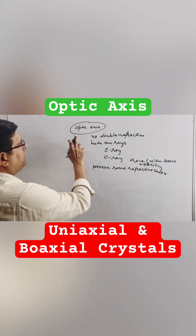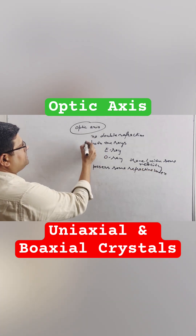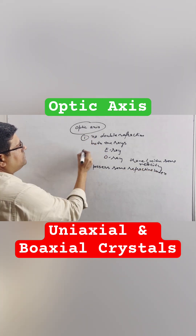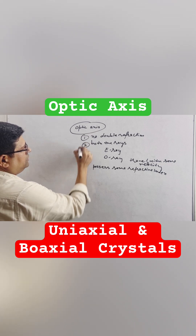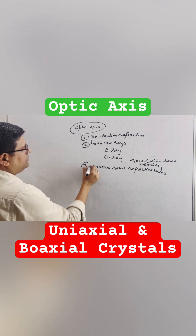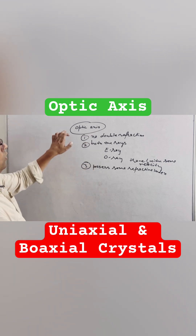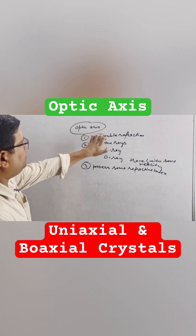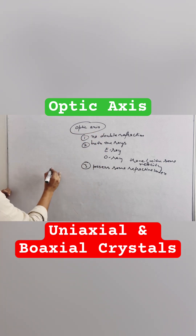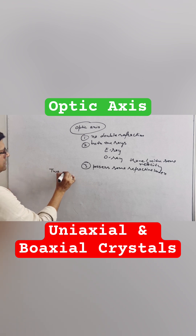So we can define optic axis in these three ways. Now, based on optic axis, there are two types of crystals.